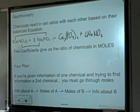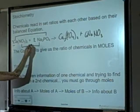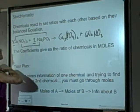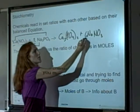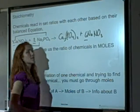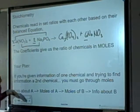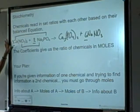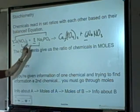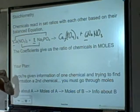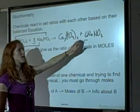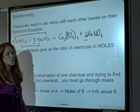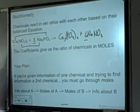The coefficients are the numbers we just put in — the 3, the 2, this is a 1 since there's no number there, and that's a 6. That tells me that 3 moles of calcium nitrate react with 2 moles of sodium phosphate to make 1 mole of calcium phosphate and 6 moles of sodium nitrate. That gives me the relationship.